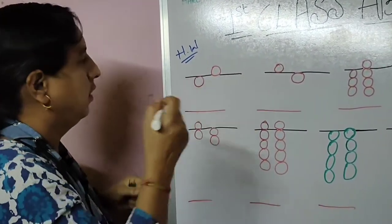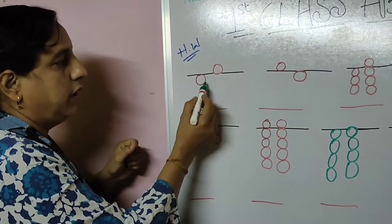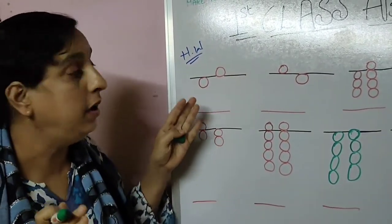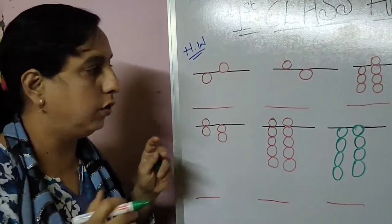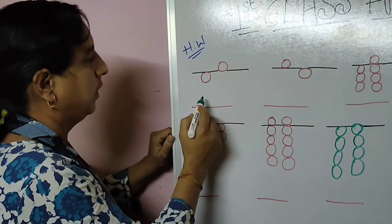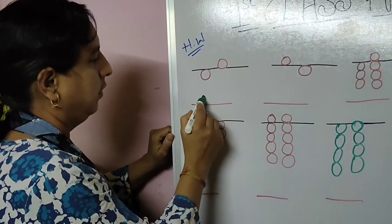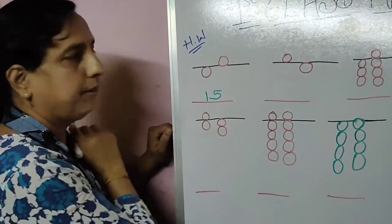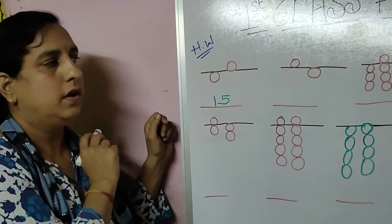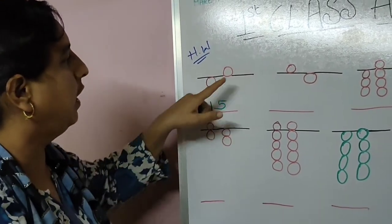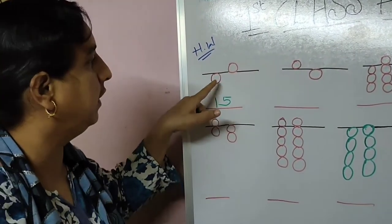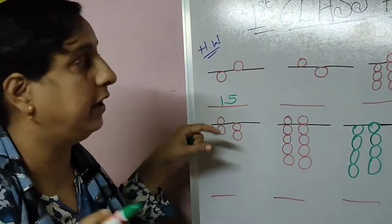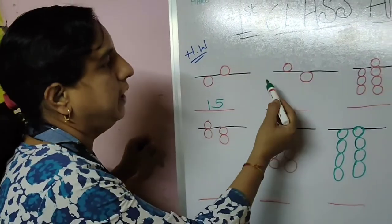This is one — first you have to write. Kabhi bhi aap tens rod ka firstly write. Here it is five. So the value of abacus is fifteen. This ka answer hai fifteen. So next sum — this is first sum, this is second sum.